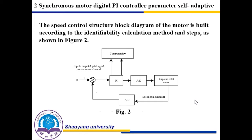The speed control structure block diagram of the motor is built according to the anti-feasibility calculation method and steps, as shown in figure 2. Furthermore, the grounding method is used to adjust the parameters of PI regulator. When the coupling of a circular motor is serious, the multi-variable PI regulator structure composed of a single motor is needed. In order to achieve better control efficacy of PI regulator, it is necessary to adjust the three control functions of proportion, integral, and derivative to form mutual coordination and restriction in the control variables.